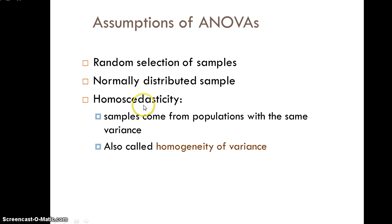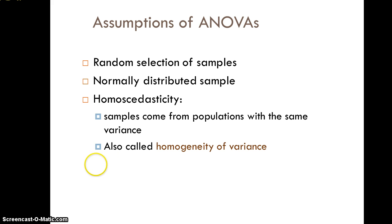Homoscedasticity — think of homogenized milk, where the cream and milk are combined so well that the molecules of cream are evenly distributed and the cream doesn't float to the top. Here, homogeneity of variance means the variability within each population or group is the same. The samples come from populations with the same variance. We can also refer to this as homogeneity of variance, or say we've met the assumption of homoscedasticity.